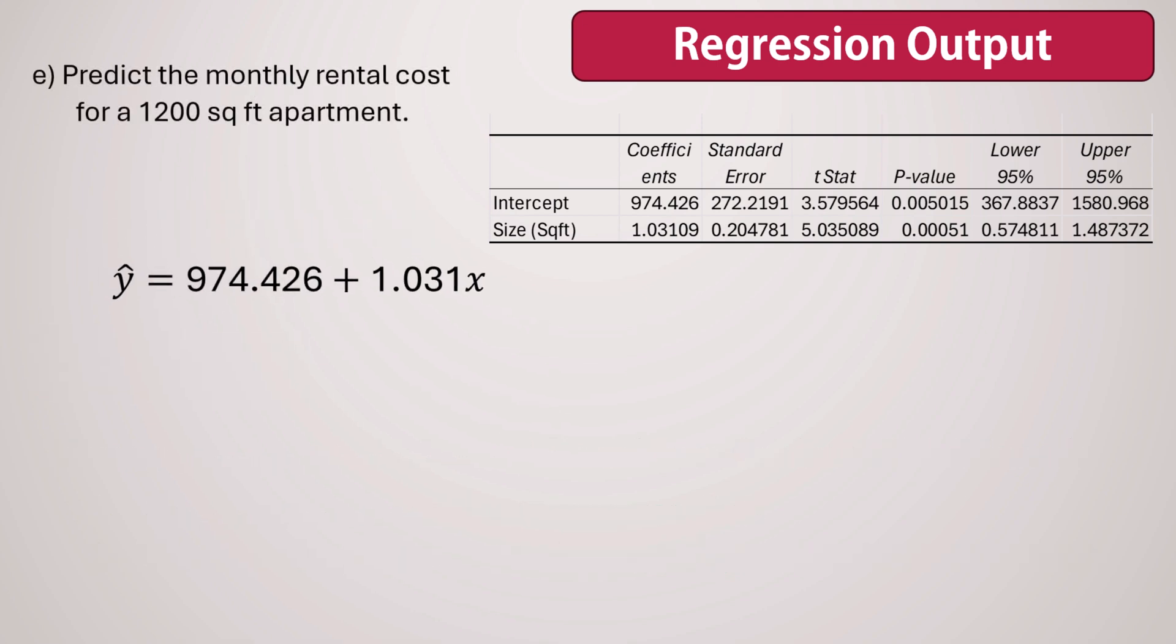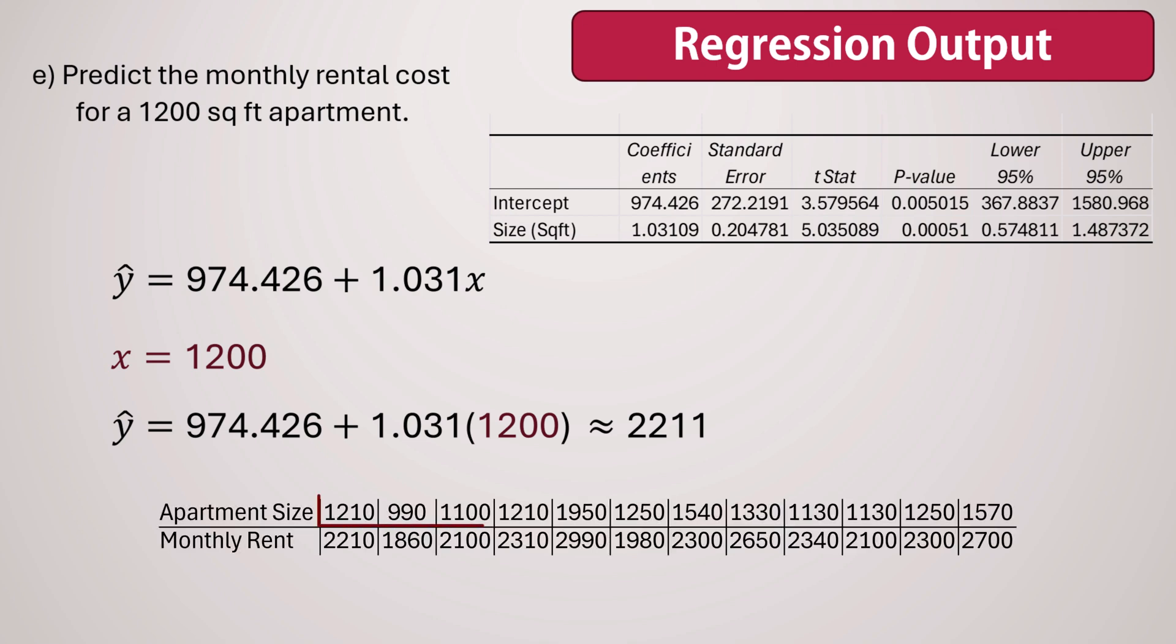Next, to predict monthly rent costs for a 1,200 square foot apartment, we substitute 1,200 for X in the regression equation. And that gives about $2,211. Note that it would be inappropriate to use this model to predict rent for a 5,000 square foot apartment, since 5,000 is outside the range of our data values.